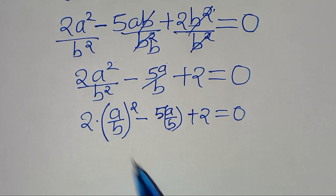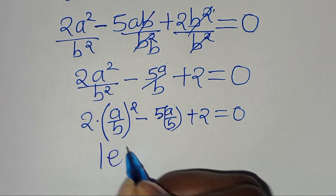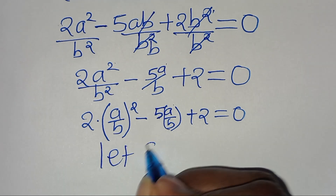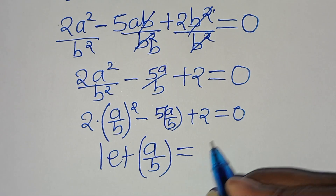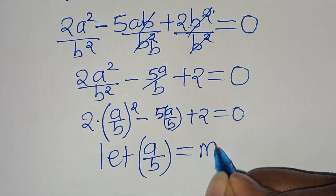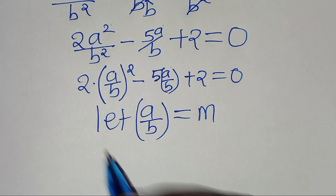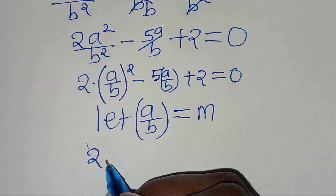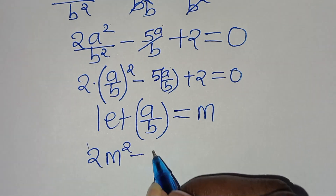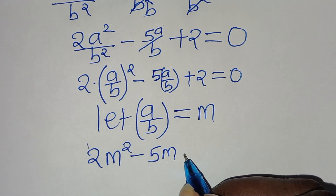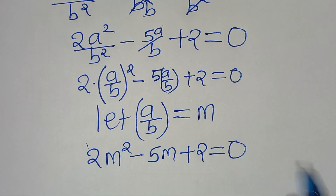We can see we have a/b here and a/b here, so we can let a over b equal to m. Substituting m, this means we have 2m squared minus 5m plus 2, equal to 0.